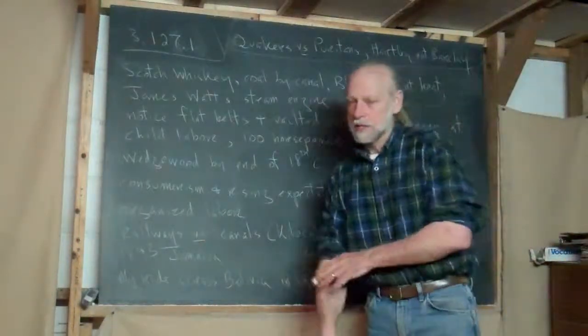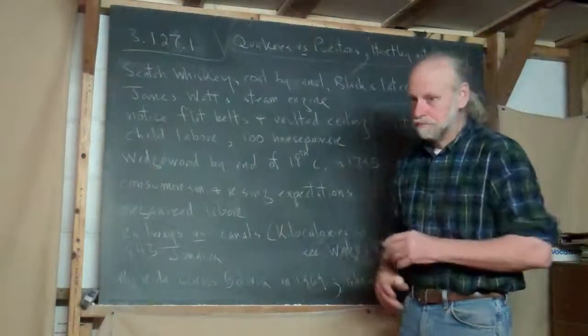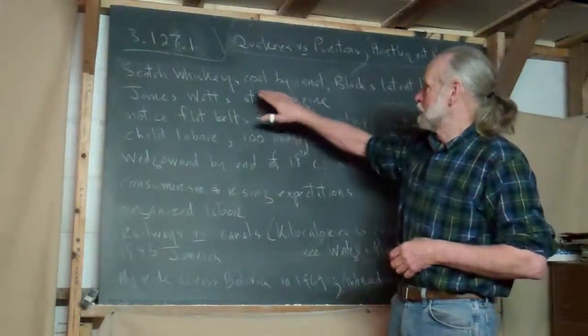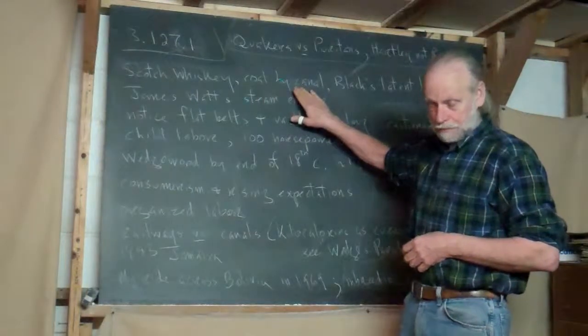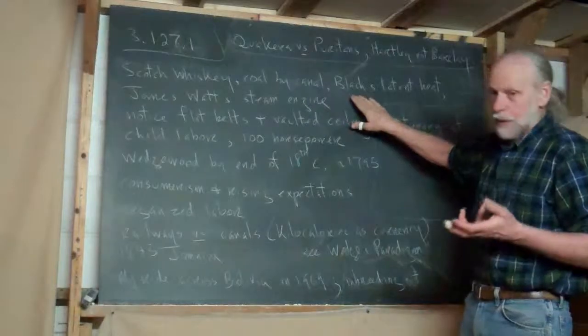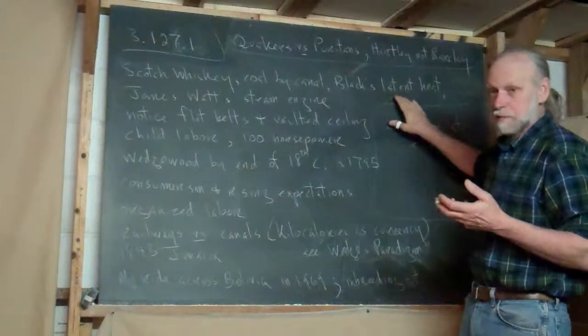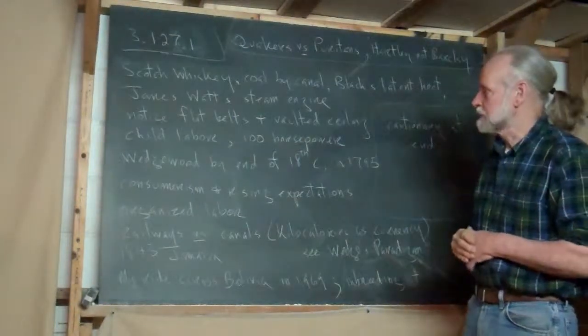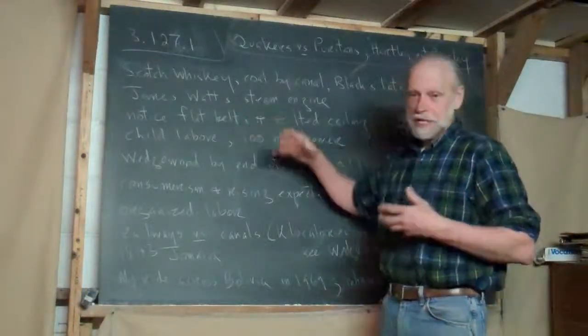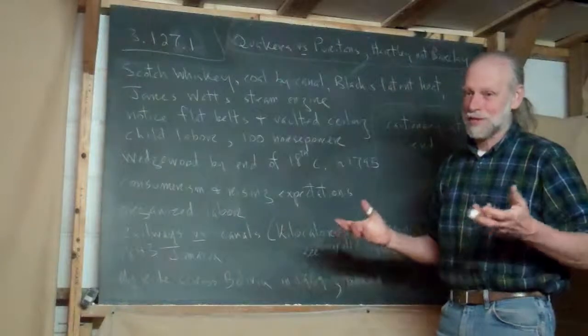In what you're going to see today, Scotch Whiskey is the transition he uses. Coal brought by canal could power those distilleries. Black, I don't know his first name, his concept of latent heat, he'll discuss that. Burke is a science historian. James Watt's steam engine, as he says, well that changed the world.